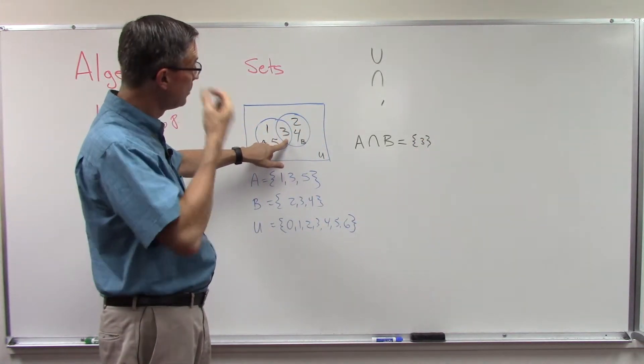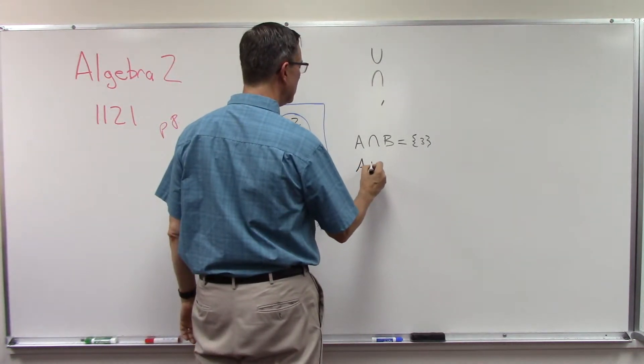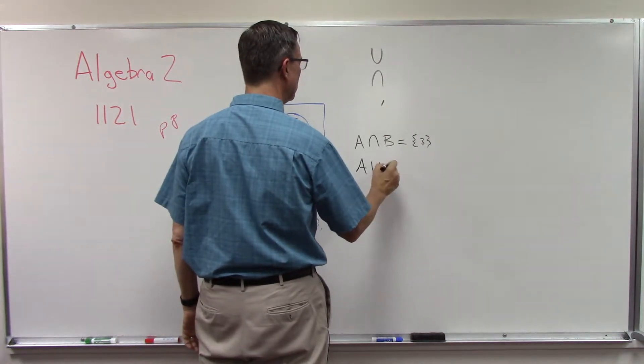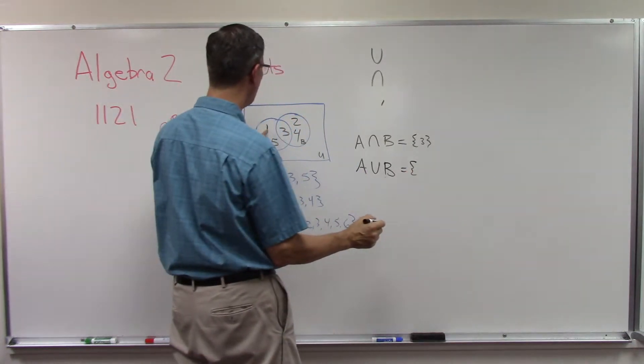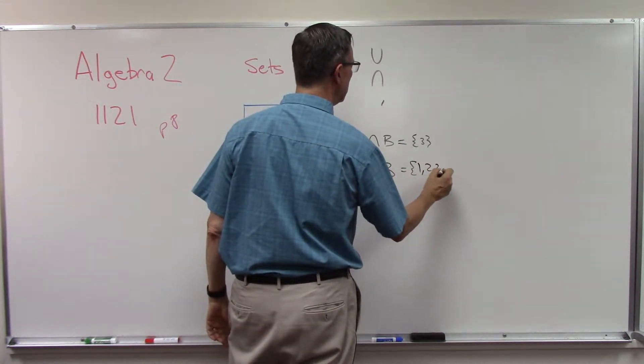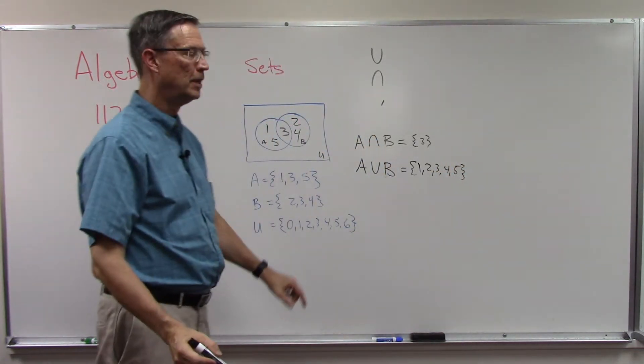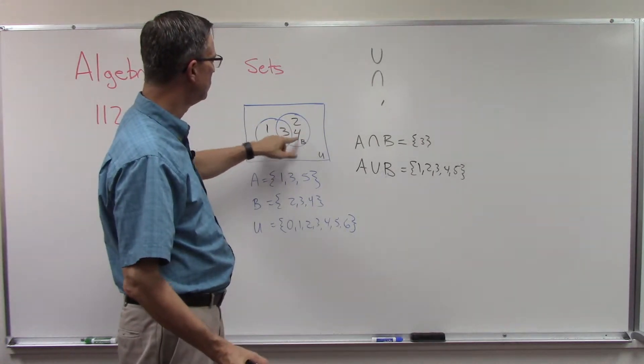Union means we put A together—whoops, not really a U, it's an upside down U—so if I put them all together I have one two three four five. Are you with me? So the intersection is where they overlap, the union is everything that's in just these two sets.